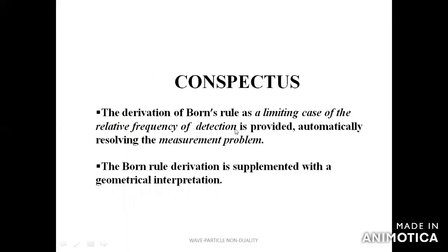Another thing is a derivation of the Born rule as a limiting case of relative frequency of detection. So far, it is a kind of algorithm given as a postulate of quantum theory. Born's rule is like a postulate—it is not derived. It's like a pure hack; we don't know why it should be, but it works beautifully. It gives the actual connection between the Schrödinger equation and experimental observation. But the true nature of how it can be derived is unclear, and I am presenting a particular derivation here. Later, I will give a geometrical interpretation to the same.